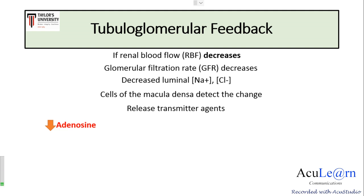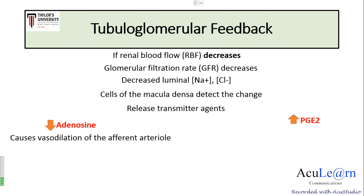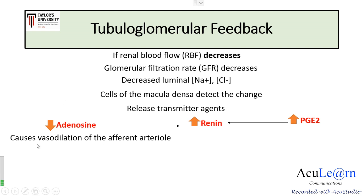Decreased release of ATP and adenosine reduces the intracellular calcium concentration in the smooth muscle cells of the afferent arteriole, causing vasodilation of the afferent arteriole. Additionally, decreased luminal sodium chloride concentration in the macula densa enhances production of prostaglandin E2.